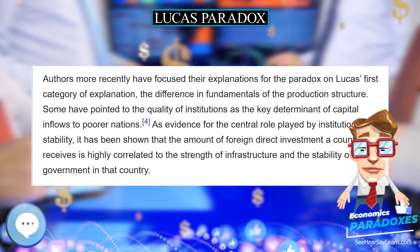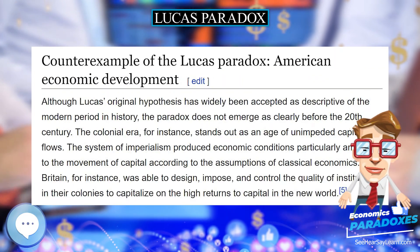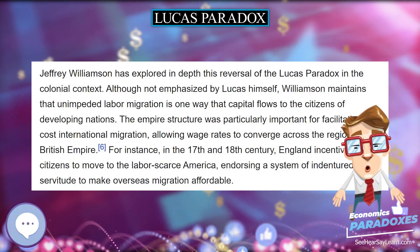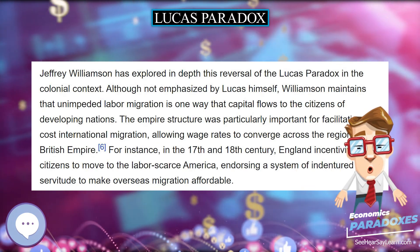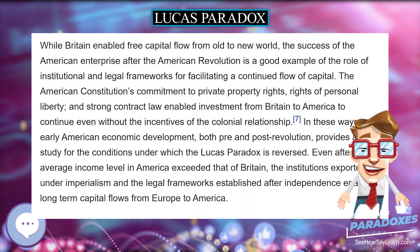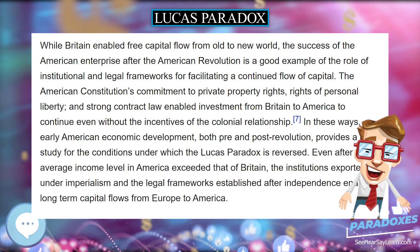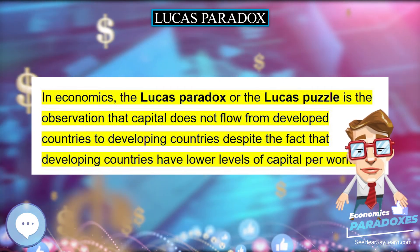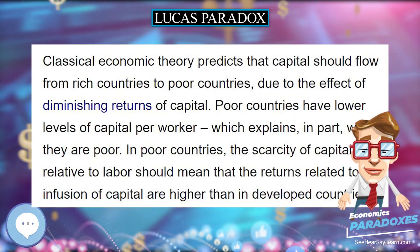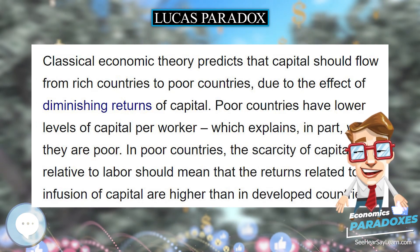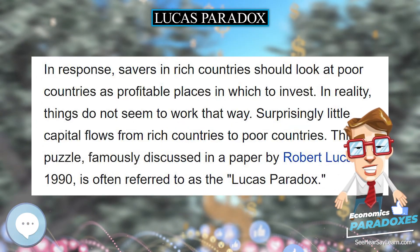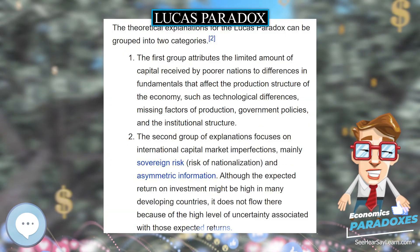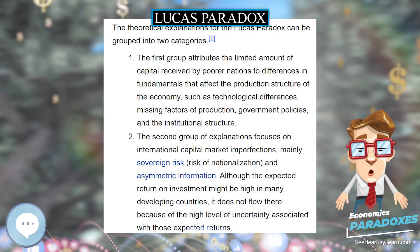The American Constitution's commitment to private property rights, rights of personal liberty, and strong contract law enabled investment from Britain to America to continue even without the incentives of the colonial relationship. In these ways, early American economic development, both pre- and post-revolution, provides a case study for the conditions under which the Lucas Paradox is reversed. Even after the average income level in America exceeded that of Britain, the institutions exported under imperialism and the legal frameworks established after independence enabled long-term capital flows from Europe to America.